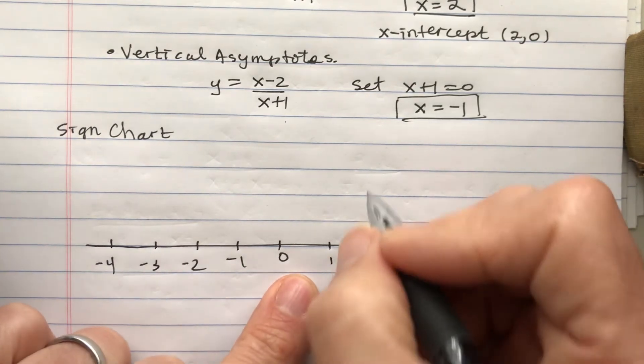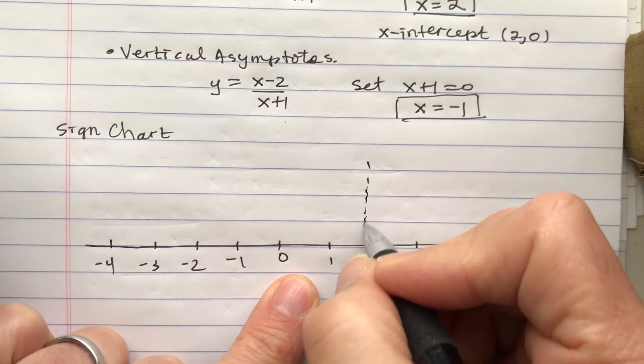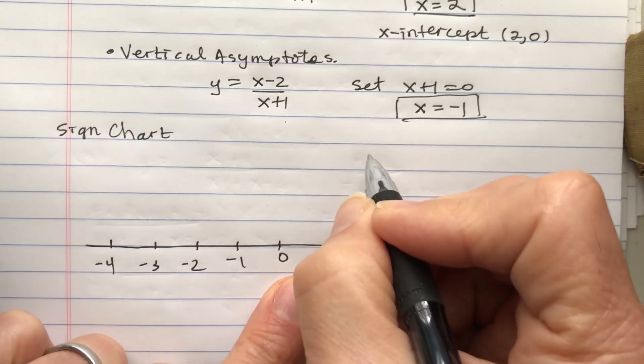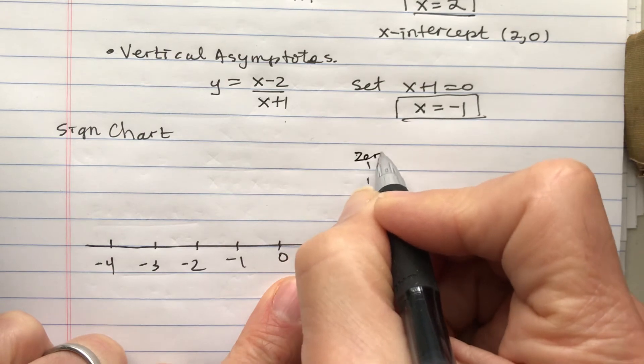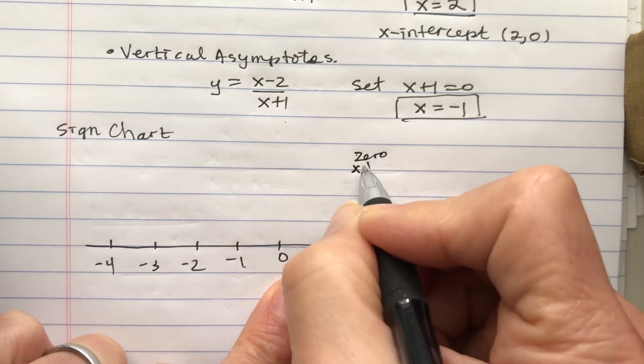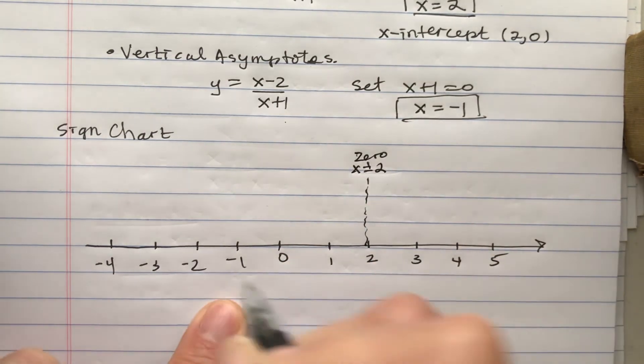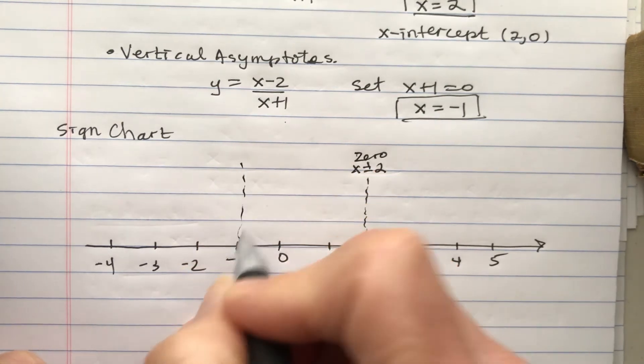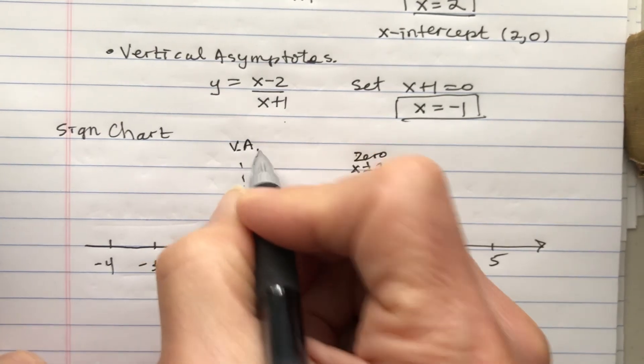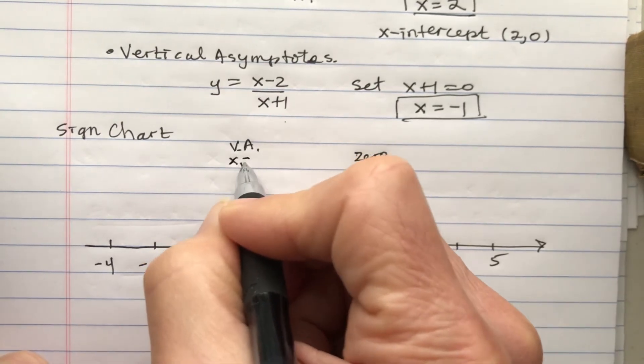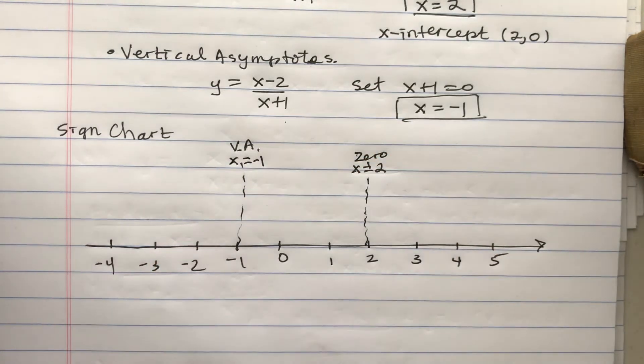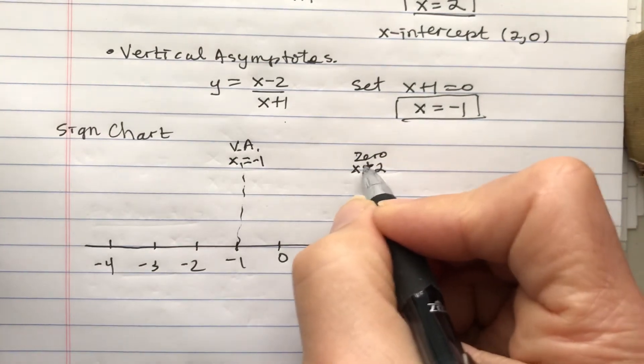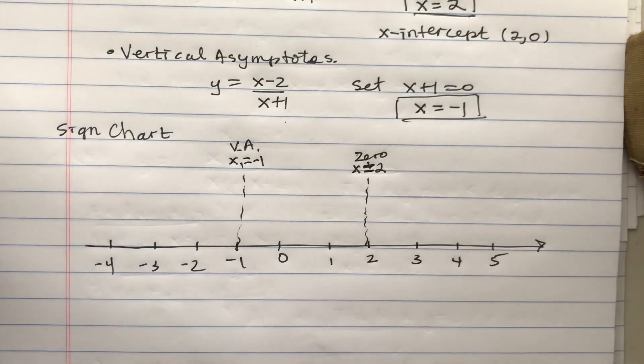On the sign chart, what we do is we put a dotted line where we have a zero. And that was at x equals 2. And I'm having another dotted line at the vertical asymptote, or you could say just a number that's not in the domain, x equals negative 1.